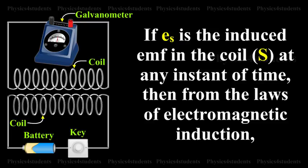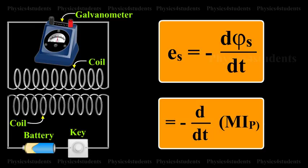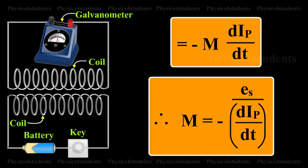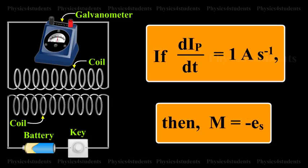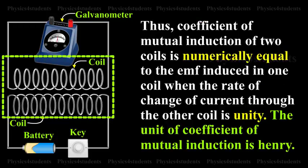If E_S is the induced EMF in coil S at any instant of time, then from the laws of electromagnetic induction, E_S equals minus d(phi_S)/dT equals minus d/dT of (M·I_p) equals minus M·(dI_p/dT). Therefore, M equals minus E_S divided by (dI_p/dT). Thus, the coefficient of mutual induction of two coils is numerically equal to the EMF induced in one coil when the rate of change of current through the other coil is unity.